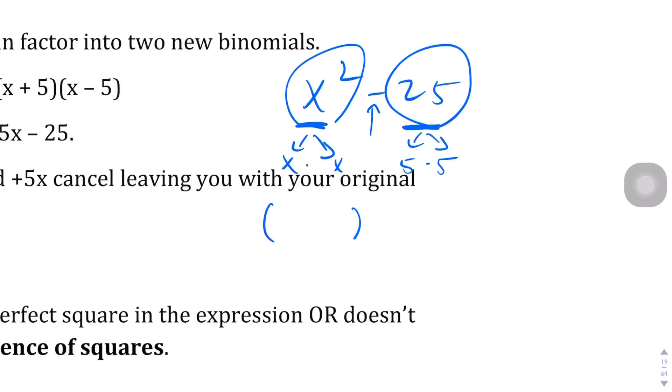...you can write it in this format where one is plus, one is minus, and then you just take the square root of one and the square root of the other and fit into this format where (x + 5)(x - 5) becomes the factored form of that original binomial.